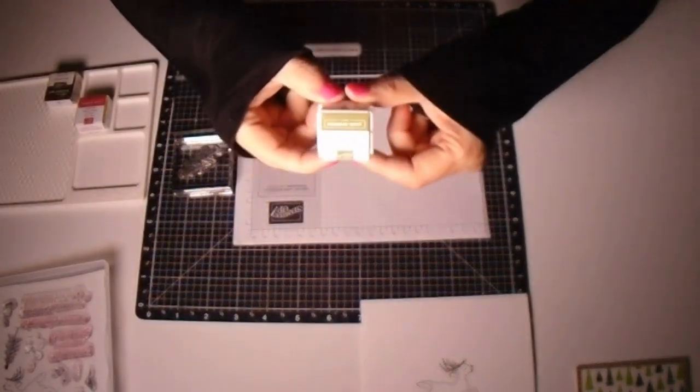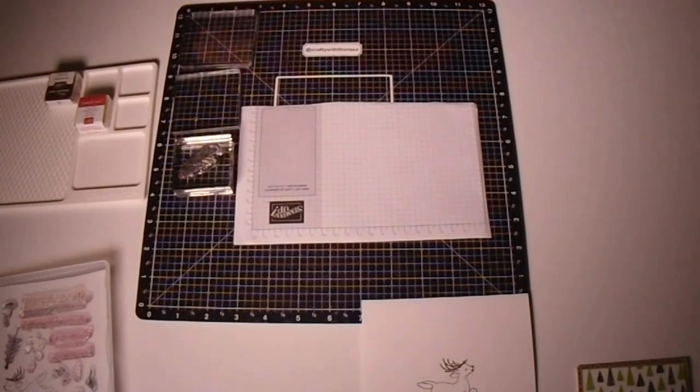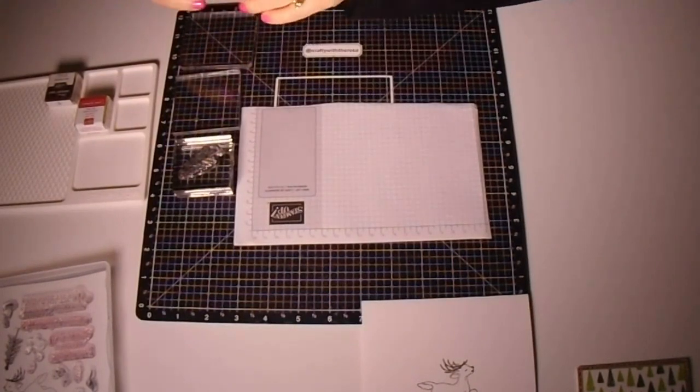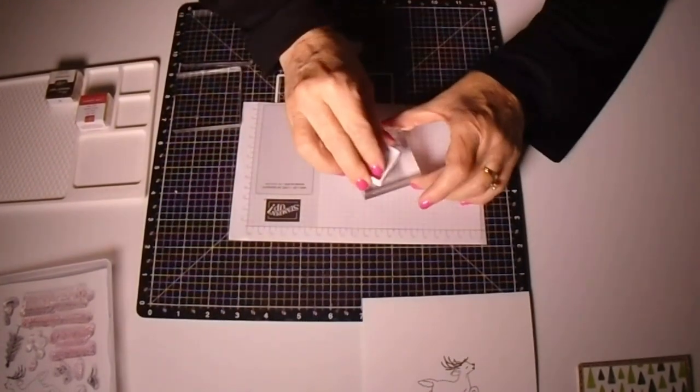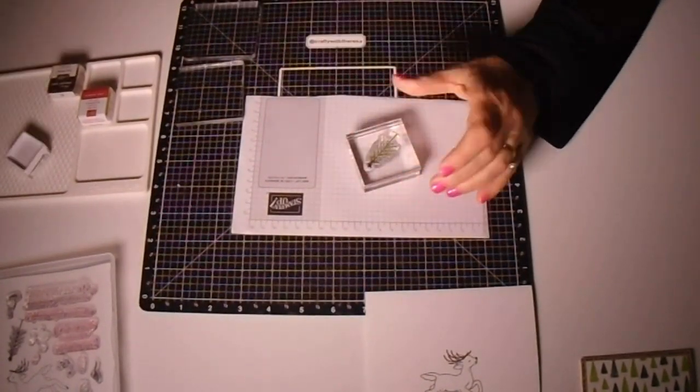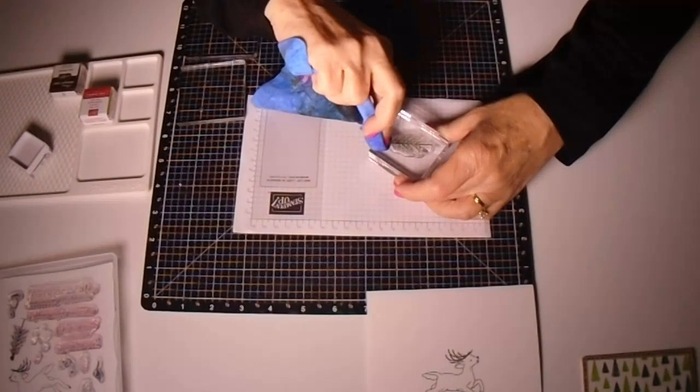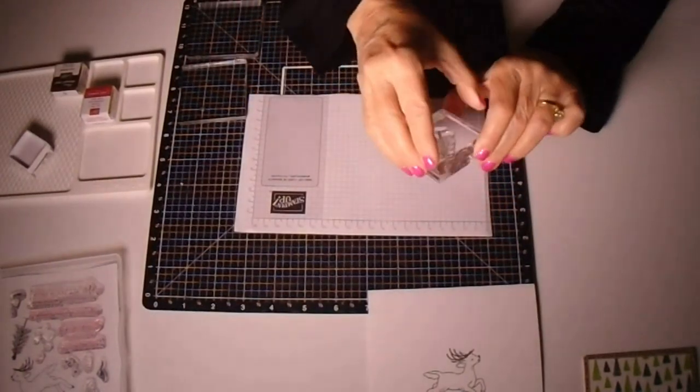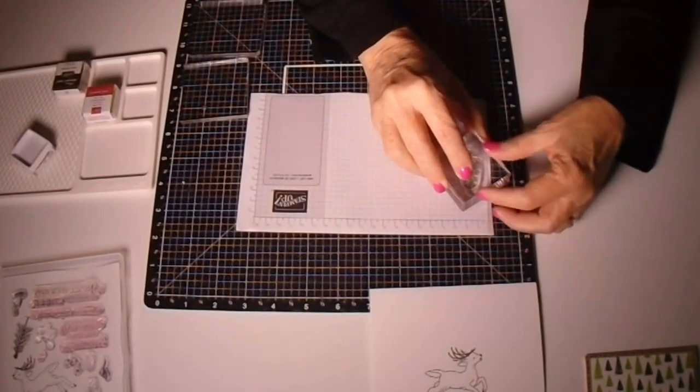We'll grab the cute little pine tree and attach it to a block and just kind of do some stamping and stamping off here on a scratch piece of paper. I'm not sure exactly how I want these to look yet, so I'll just keep working with it until I get the design I want.